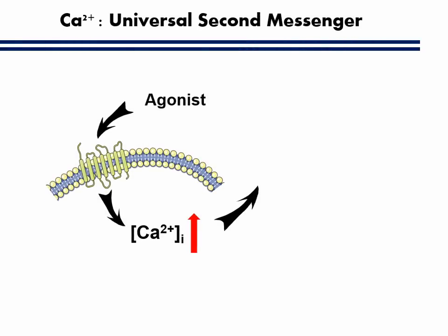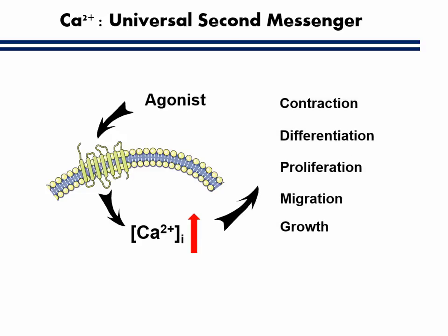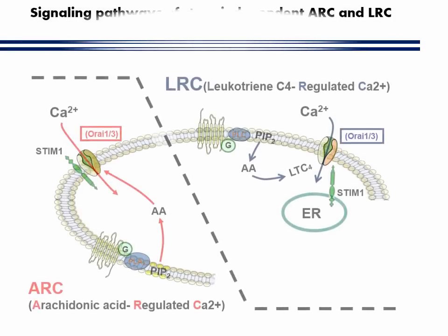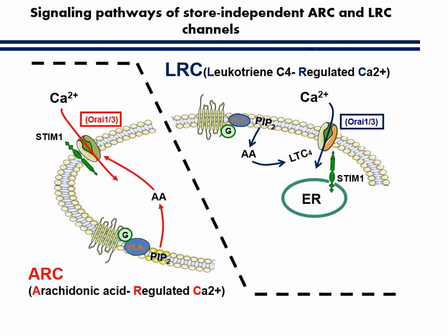Calcium is a universal second messenger. Increased calcium concentrations in the cytoplasm, in response to a variety of receptor agonists, control many cellular functions. Non-excitable cells possess both store-operated calcium entry pathways and store-independent calcium entry pathways. The arachidonic acid regulated calcium channel (ARC channel) and the LTE-24 regulated calcium channel (LARC channel) are store-independent conductances recorded from HEK 293 cells and vascular smooth muscle cells respectively.